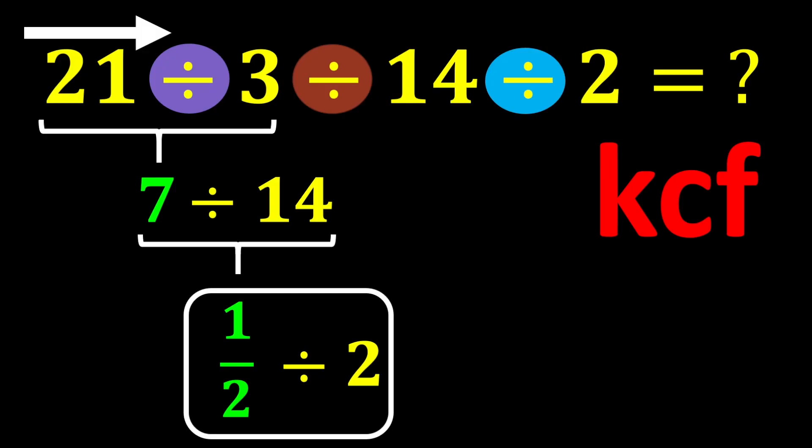According to the KCF rule, we keep 1 over 2 as it is, change division to multiplication, and flip 2. 1 over 2 multiplied by 1 over 2 gives us 1 over 4, which is our correct and final answer.